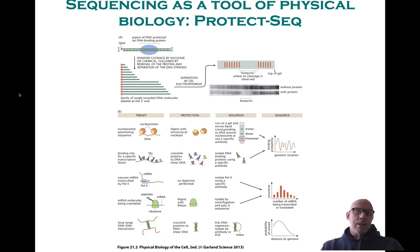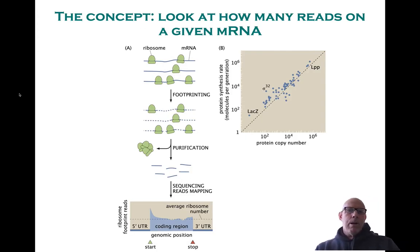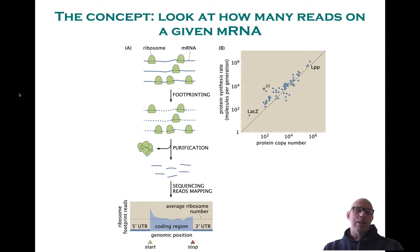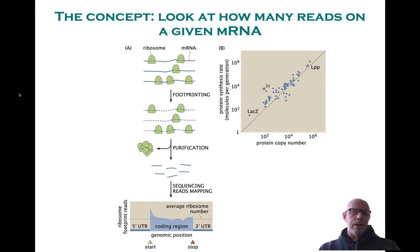The ribosomal profiling idea is basically as follows: you have an mRNA decorated with ribosomes. After footprinting, the RNA not protected by the ribosome is digested, and then you purify those RNAs and map them. You get a frequency distribution telling you how frequently a given part of the genome's mRNAs are decorated by ribosomes. This allows you to characterize the rate of protein synthesis. They found a very nice correlation between the protein synthesis rate as measured by ribosomal profiling and protein copy numbers, so effectively the ribosomal profiling method became a scheme for characterizing the proteome itself.